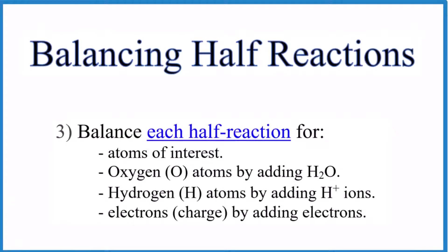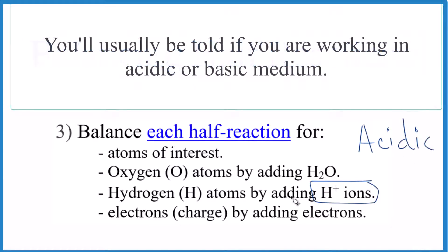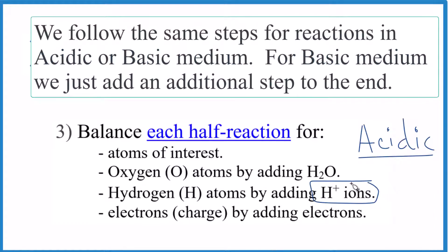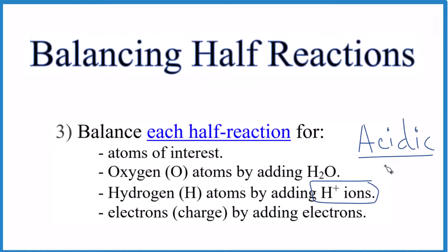This video is all about balancing half reactions. We're in an acidic medium, so we'll be adding H+ ions. If you're in basic medium, you'll almost always be told — it's the same process, we just add another step at the end. Also note that while we've been using oxidation numbers, here we're going to look at ionic charge when we balance the half reactions. You could use oxidation numbers, but ionic charge is a little bit easier.